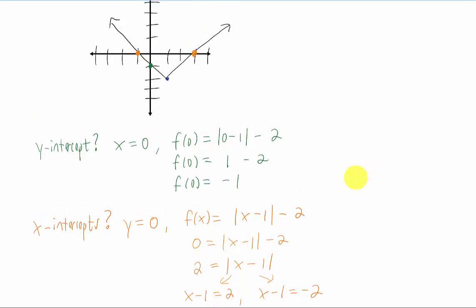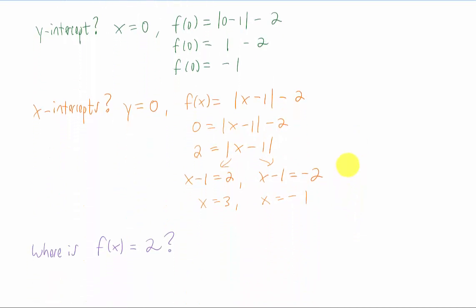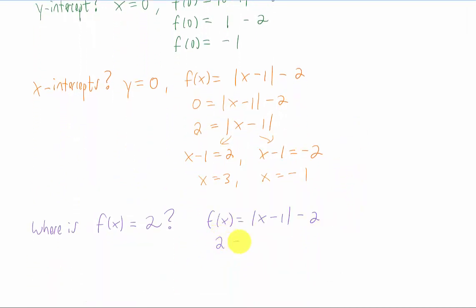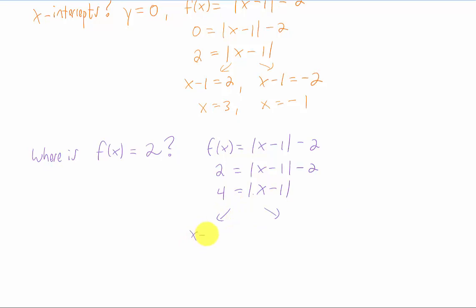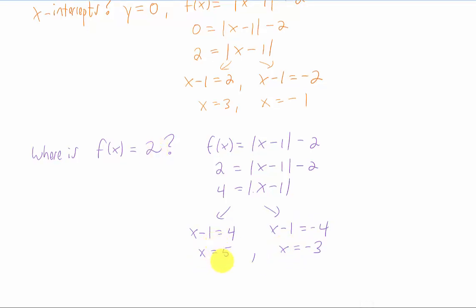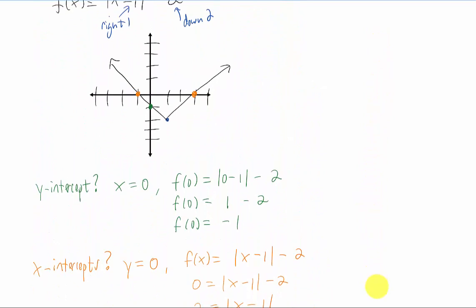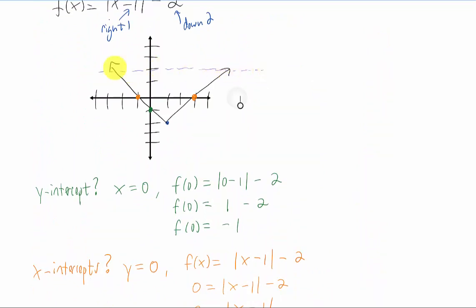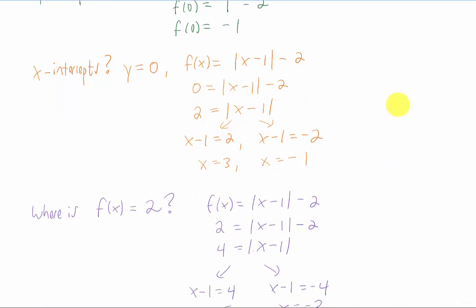We might also ask: where is our function equal to two? We plug in the function value of two and get the absolute value by itself: |x − 1| = 4. This splits into two pieces — x − 1 = 4 or x − 1 = −4. Adding one to both sides in each case gives x = 5 or x = −3. Going back to the graph, the function value is two at x = negative three and x = 5, which matches what we found algebraically.